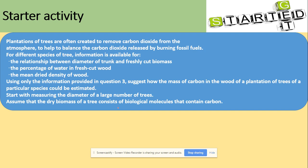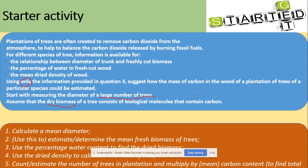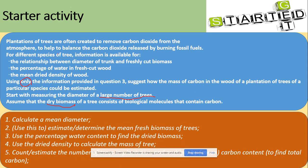You need to use only the information provided — that's an important thing, we've got 'only'. We're looking at the giant biomass here and the large number of trees — that's important as well. So calculate the mean diameter, which comes from the large number of trees. Then estimate the mean fresh biomass, because we are starting with fresh biomass.